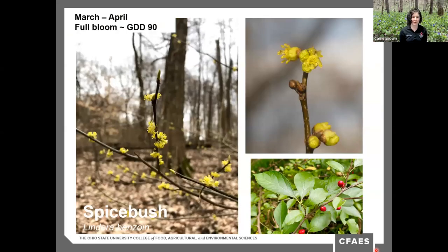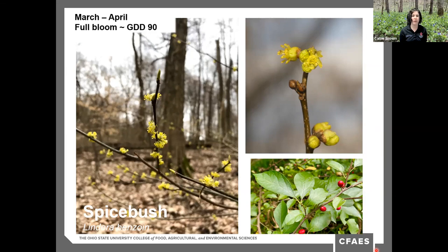Spicebush is a deciduous shrub — one of those non-ephemerals I included — found in rich forests, dry woodlands, slopes, and swamps. It's named for its leaves, which have a really nice odor when crushed. It has beautiful yellow flowers and is in full bloom right now in Columbus, Ohio. This plant is dioecious, meaning there are separate male and female plants. In order to produce fruit — small red berries — both a male and female plant must be present. If successfully pollinated, it produces a bright red drupe that matures into the fall and is relished by wildlife.